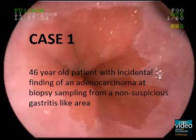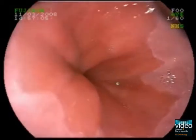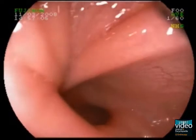The first case is a 46-year-old patient with an incidental finding of an adenocarcinoma at routine random biopsy sampling for suspected gastritis. Subsequently he was referred to our unit for localization and endoscopic treatment of suspected early gastric adenocarcinoma.